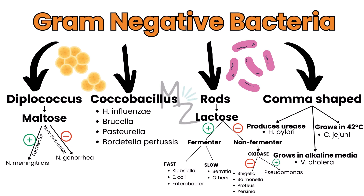Coccobacilli include Haemophilus influenzae, Brucella, Pasteurella, and Bordetella pertussis. Rods are further subdivided based on lactose fermentation: fast fermenters include Klebsiella, E. coli, and Enterobacter; slow fermenters include Serratia and others. Non-lactose-fermenting bacteria are subdivided based on the oxidase test — oxidase positive is Pseudomonas, while oxidase negative includes Shigella, Salmonella, Proteus, and Yersinia.